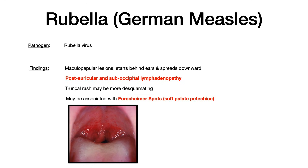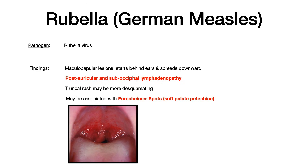The key takeaway for rubella is behind the ear — that's where the rash starts and where the lymphadenopathy is most prominent. The mnemonic: rubella has 'ella' in the name, which reminds you of 'hello' — like answering your phone. That phone is touching right behind the ear, which always reminds you that rubella starts behind the ear and the lymphadenopathy tends to be most prominent post-auricularly.